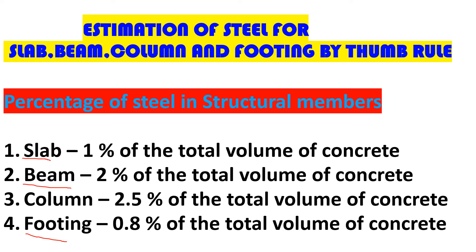What this means is that we first calculate the volume of concrete, and then a certain percentage of that volume is used to calculate the quantity of steel. So we are going to take an example — for the slab, we get the volume and then see how we proceed to calculate the quantity of steel.